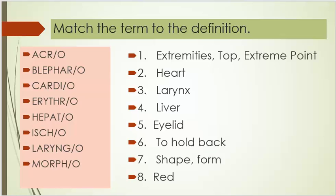Now the terms are: acro, blefero, cardio, erythro, hepato, isco, laryngeo, and morpho. Number one, extremities, top, extreme point. Number two, heart.